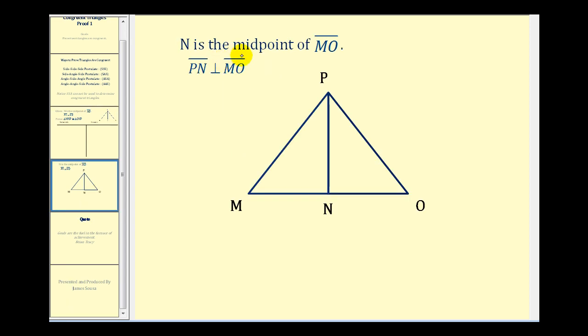Well if point N is the midpoint of segment MO, we know that segment MN would be congruent to segment NO. And if segment PN is perpendicular to segment MO, we know we'd have two right angles here and here which means those two angles would be congruent. And then notice that the two triangles share side PN and of course PN is congruent to itself.